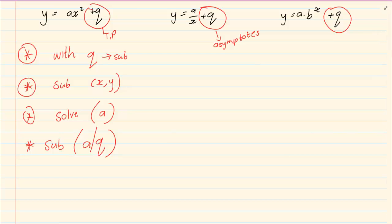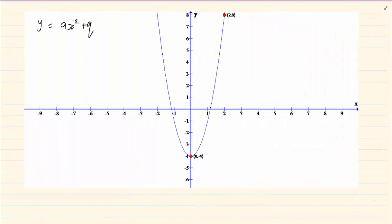Now let's take the following example. If we look at this parabola, what is the turning point? The turning point is 0 and minus 4. But we know that the q is only the y value. So we have y equals ax squared minus 4.